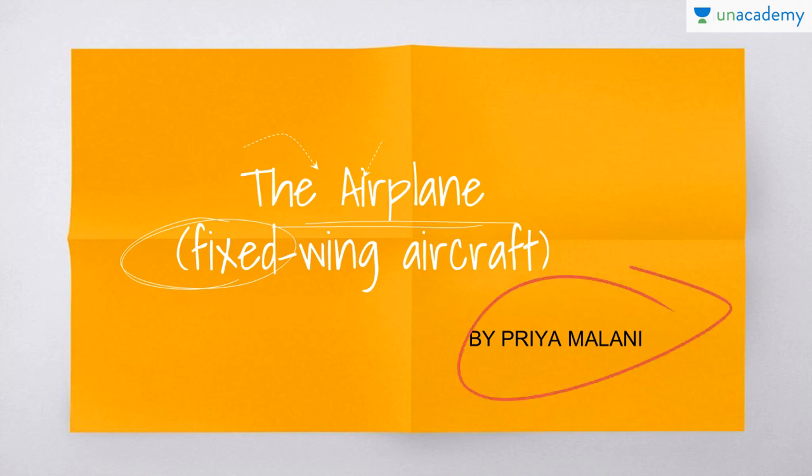An airplane actually is the fixed-wing aircraft. I'm going to discuss with you the configuration of the airplane itself — the fixed-wing aircraft, and not the helicopter or any other such aircrafts. In the last lesson, I discussed the wing and the fuselage, different types of fuselage, wing placements, and the different planforms of the wing.